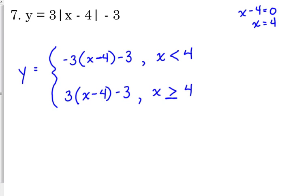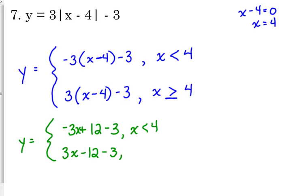So let's clean these up. Let's distribute that negative 3 and the positive 3, and then combine like terms. Okay, so when we distribute negative 3, we get negative 3x plus 12 minus 3. And when we distribute this 3, 3x minus 12 minus 3.